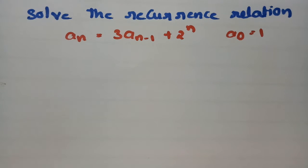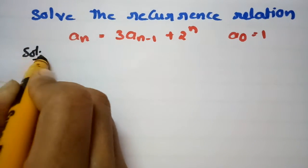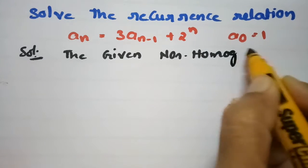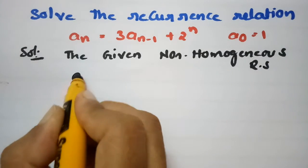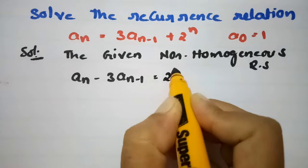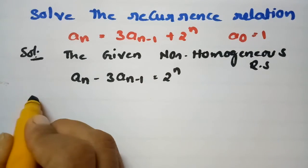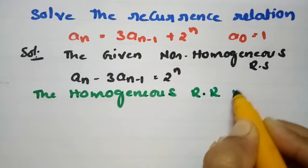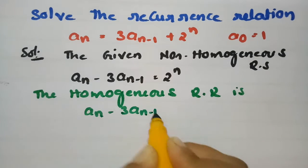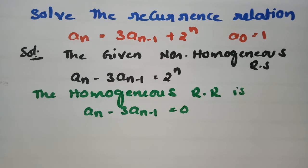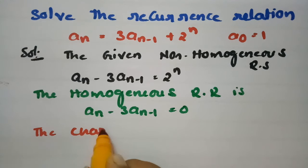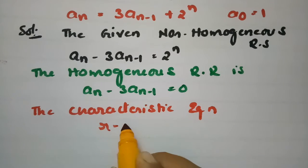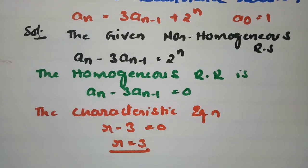First, identify the inhomogeneous recurrence relation: a_n - 3·a_{n-1} = 2^n. Next, write the homogeneous recurrence relation by setting the right-hand side to zero: a_n - 3·a_{n-1} = 0. The characteristic equation is r - 3 = 0, so the characteristic root is r = 3.